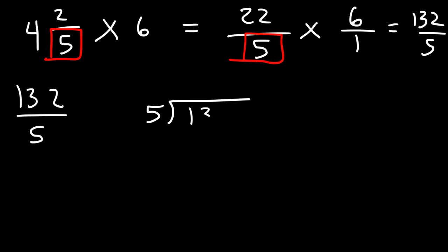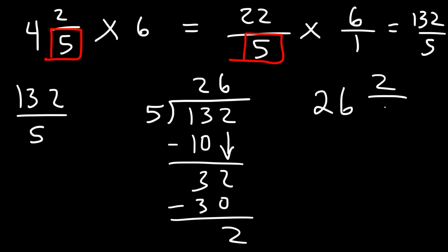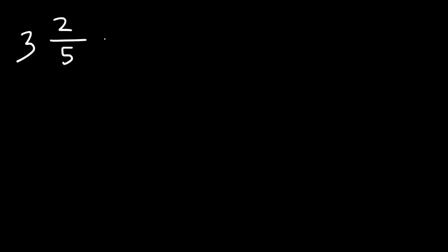To convert 132 over 5 back to a mixed number, we use long division. 5 goes into 13 two times; 5 times 2 is 10, and 13 minus 10 is 3. Bring down the 2: 5 goes into 32 six times; 5 times 6 is 30, remainder 2. So the answer is 26 and two-fifths.